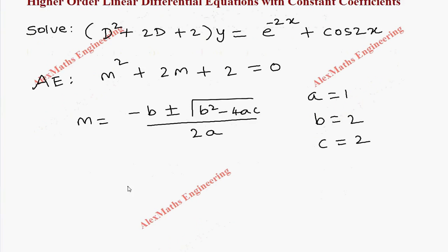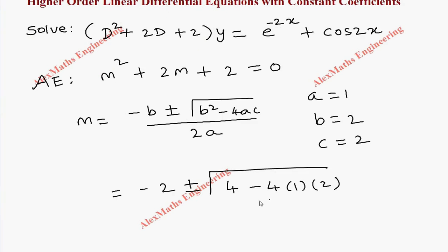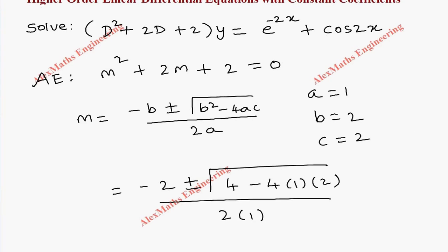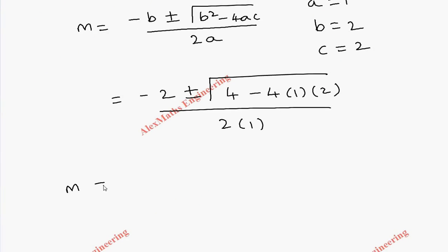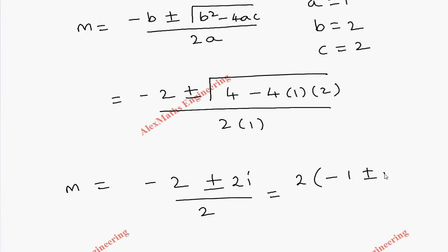By substitution we get: minus 2 plus or minus root of 2² (which is 4) minus 4 × 1 × 2, all divided by 2a where a is 1. So finally the m value is minus 2 plus or minus. Inside the root we have 4 minus 8 = minus 4, so it becomes 2i divided by 2. We can take 2 common in the numerator, giving minus 1 plus or minus i.